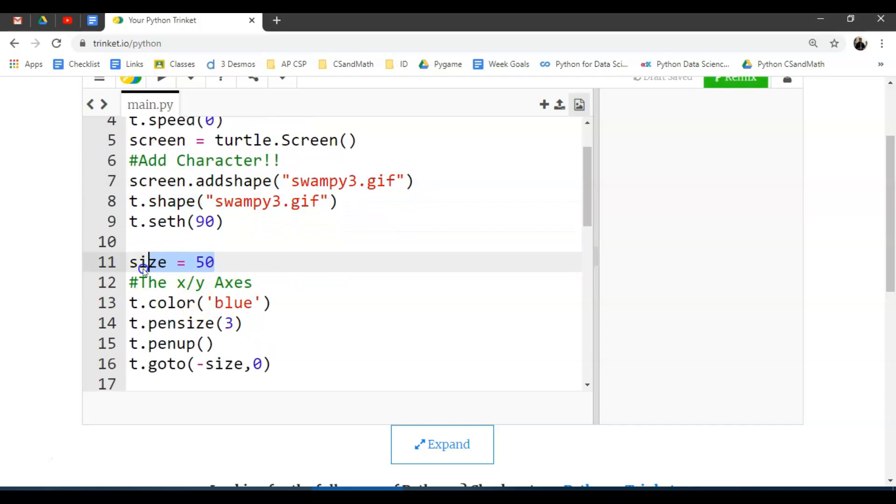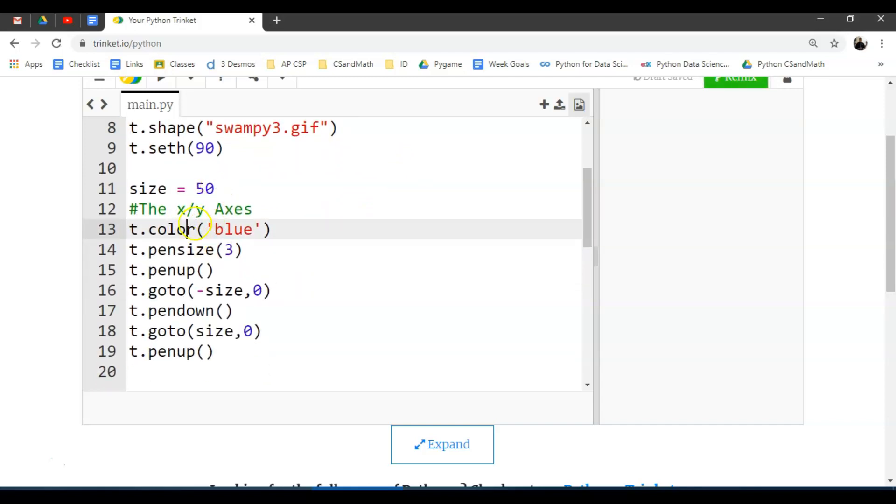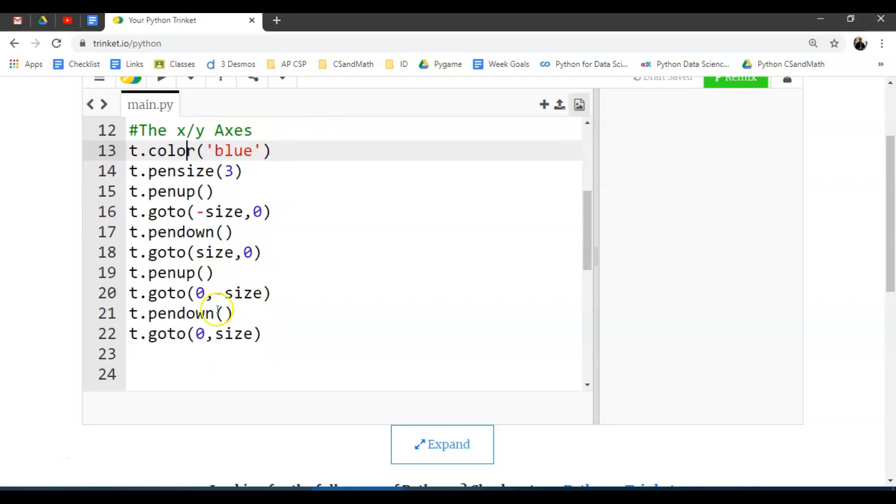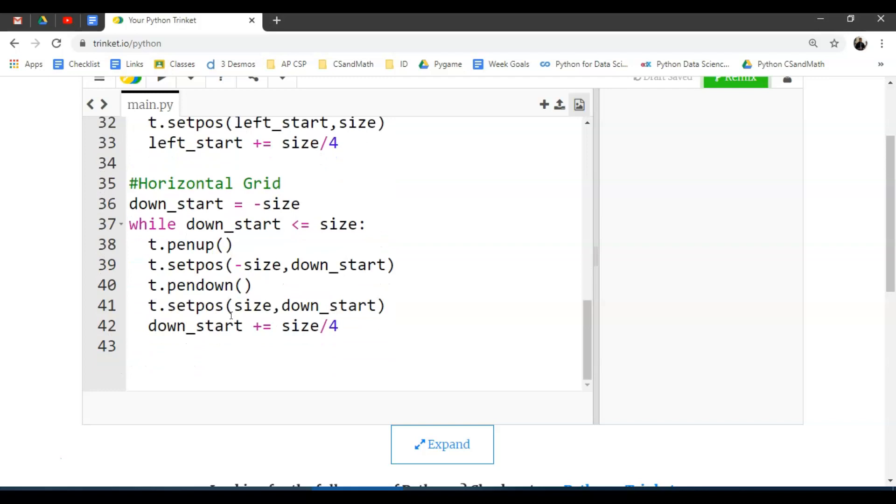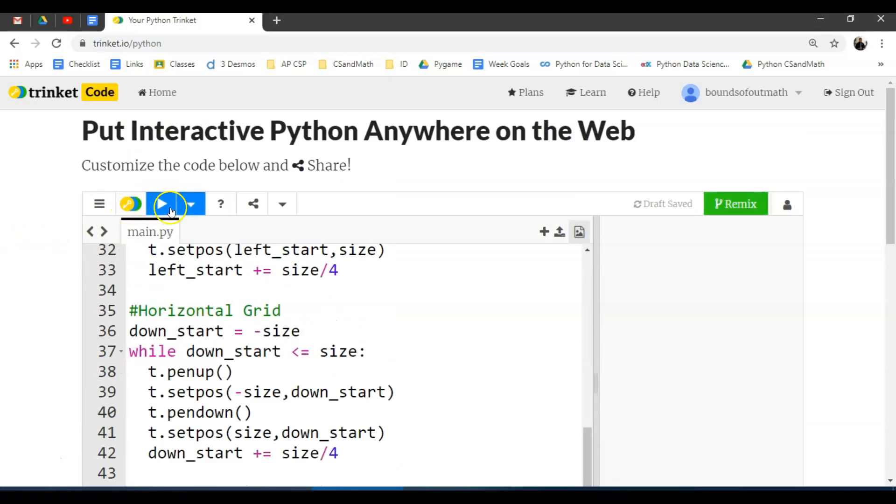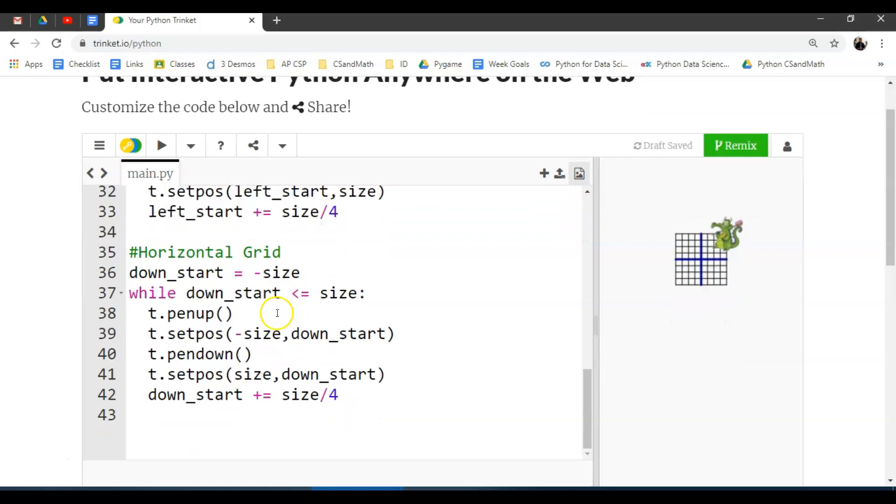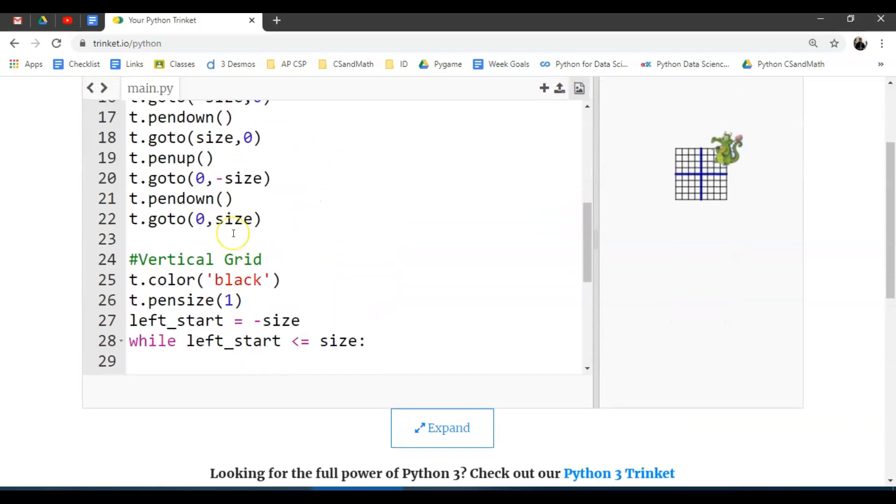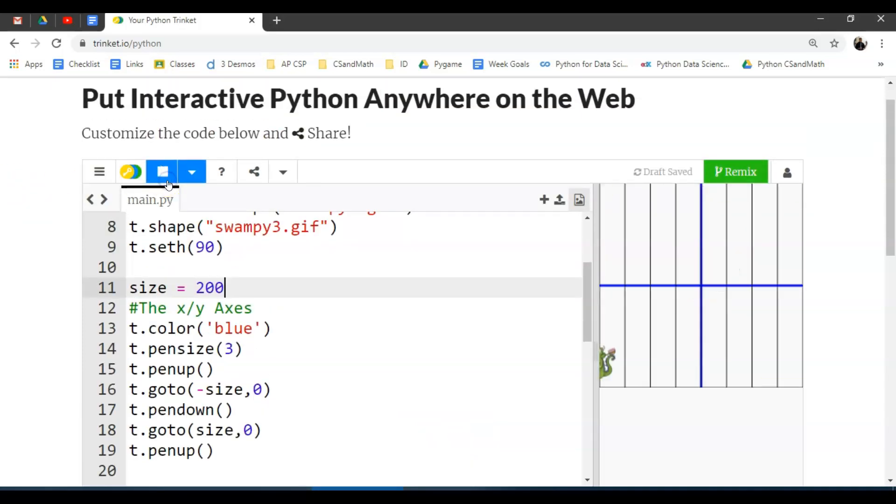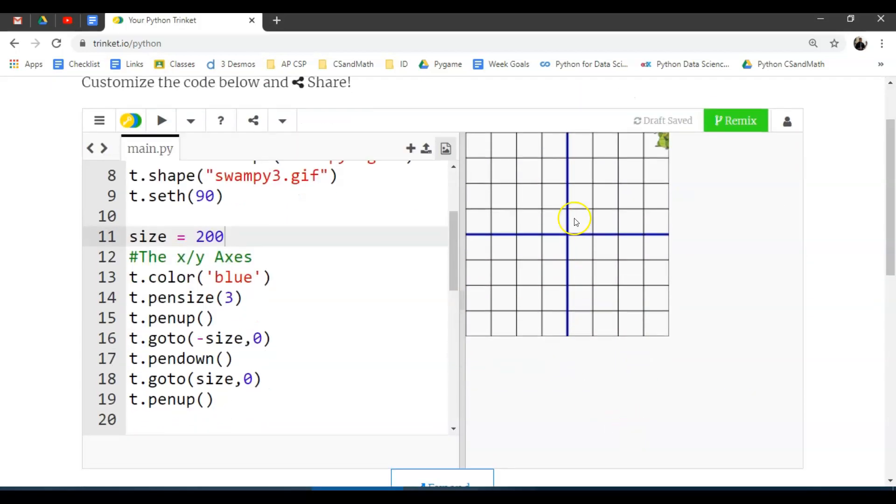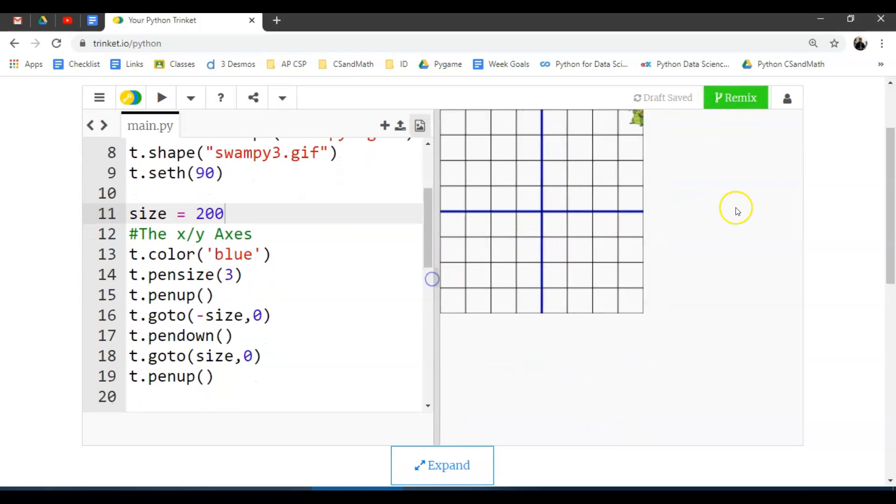We also put in this size parameter, or the size variable I should say, that goes in and makes the code a little cleaner so we can adjust the variable size. This makes a pretty tiny grid. Let's set that size back to 200 the way we originally had it. I'm going to pull this over and you've got to just kind of pull this over and it will make it a little bit bigger to fit the area you have left for it.